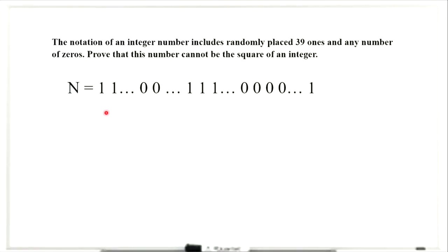Let us consider an integer number, the notation of which includes randomly placed 39 ones and any number of zeros. We should show that this number cannot be the square of an integer.